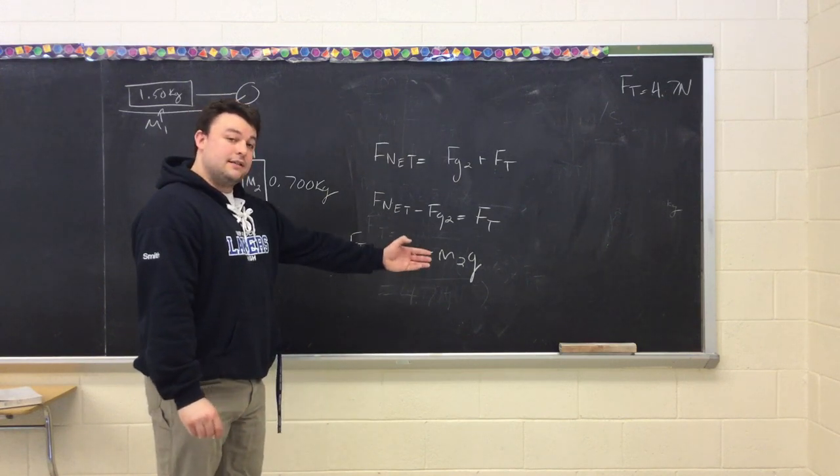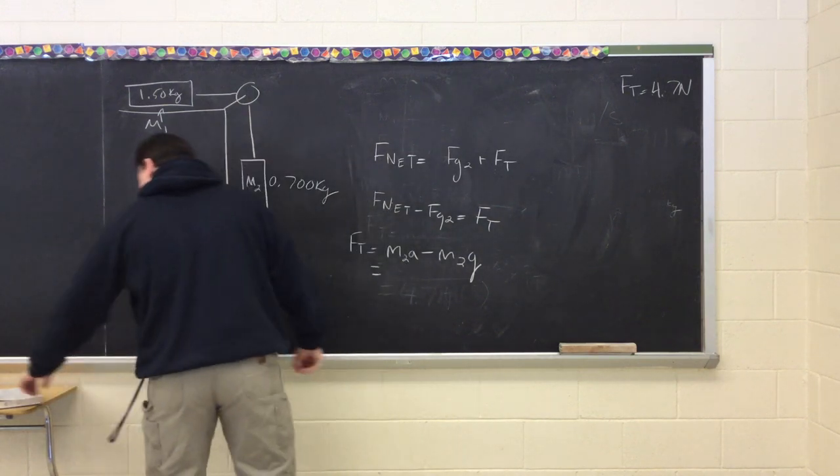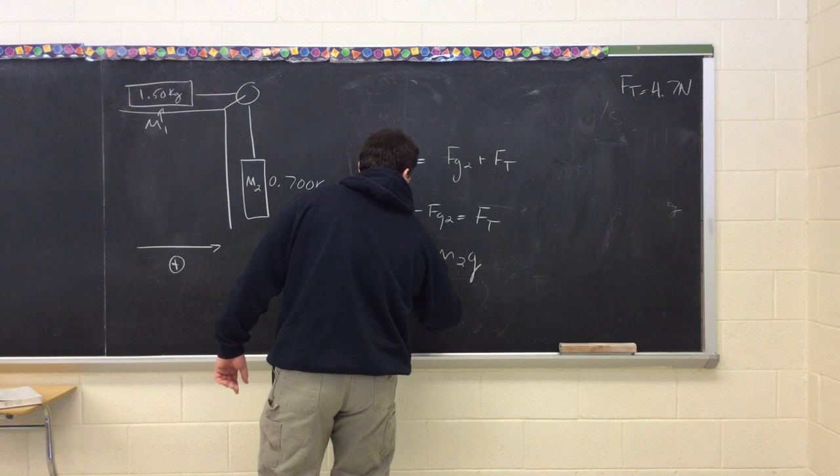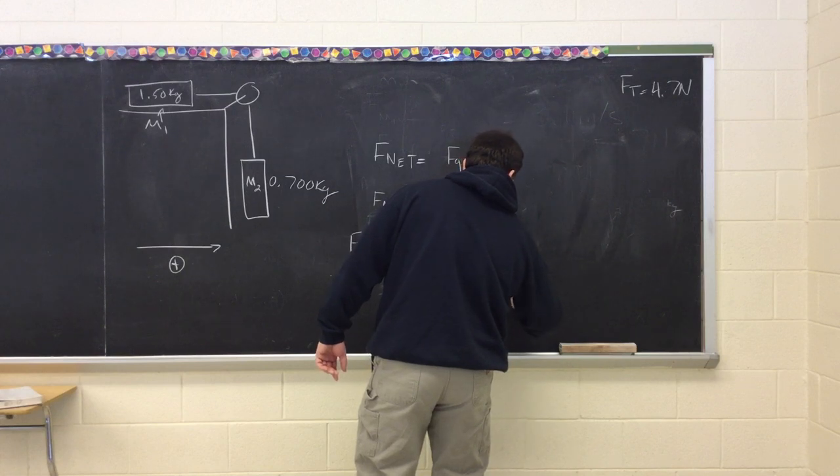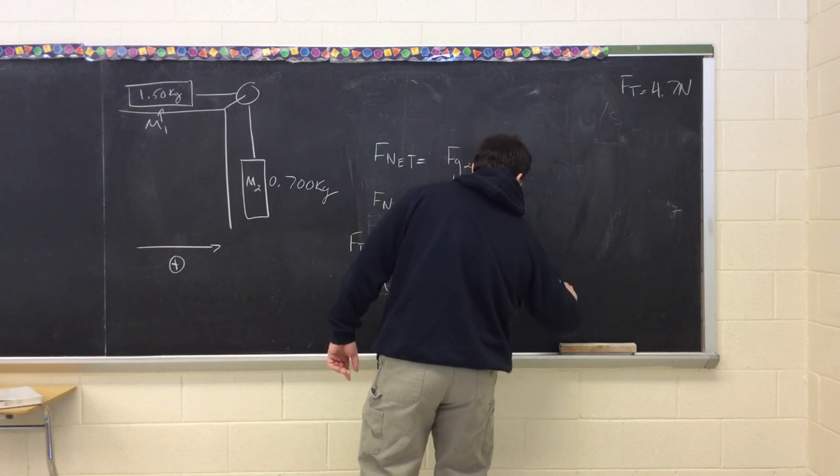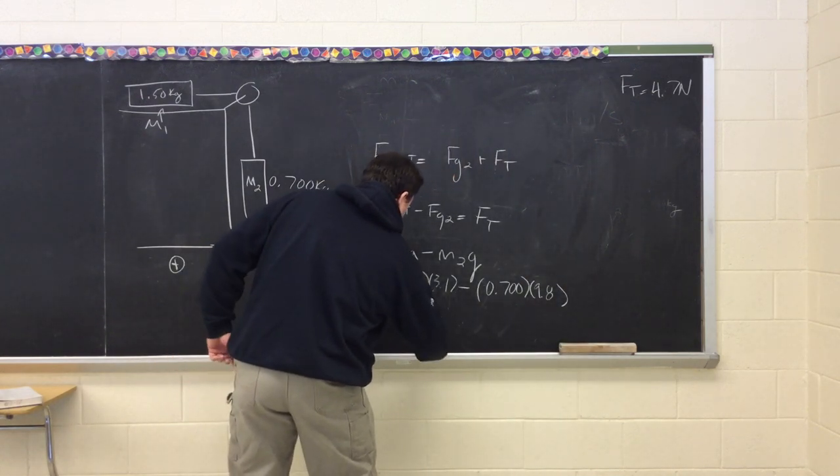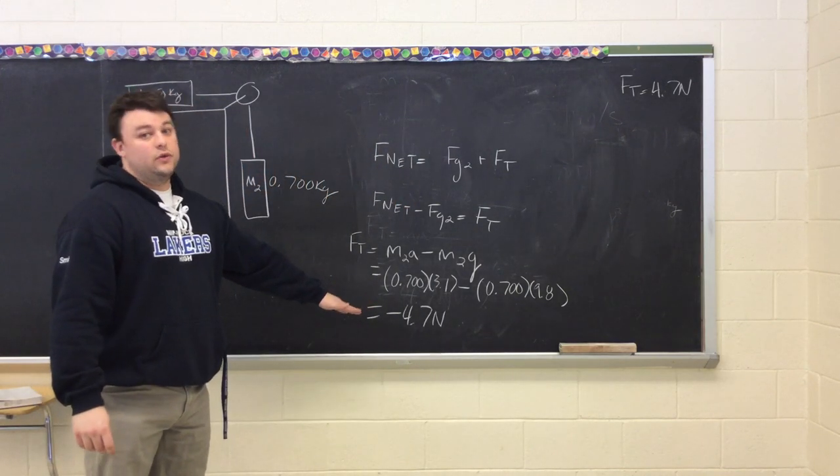Force tension equals mass 2 times acceleration minus mass 2 times g. We sub in our masses. Negative 4.7 newtons.